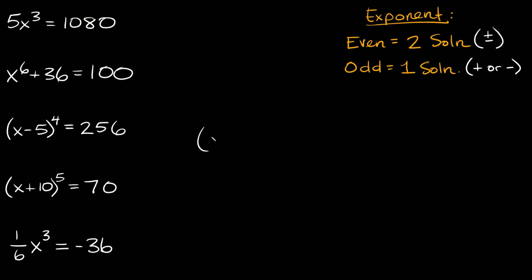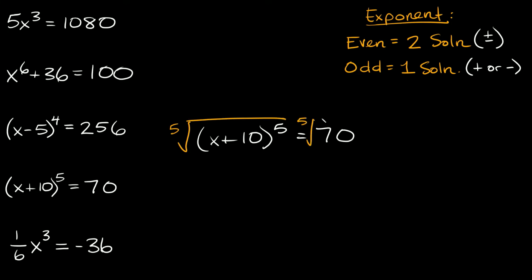Next one: (x plus 10) to the fifth is equal to 70. We have an odd exponent so we're going to have one solution. The first thing we want to do is take the fifth root of both sides. Those cancel out and we're left with x plus 10 is equal to the fifth root of 70.